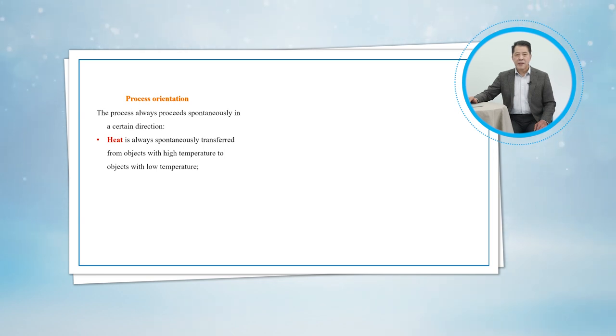It is common experience that a cup of hot coffee in a cooler room eventually cools off. This process satisfies the first law of thermodynamics since the amount of energy lost by the coffee is equal to the amount gained by the surrounding air. Now, let's consider the reverse process: the hot coffee getting even hotter in a cooler room as a result of heat transfer from the room air. We all know that this process never takes place. Yet, doing so would not violate the first law as long as the amount of energy lost in the air is equal to the amount gained by the coffee.